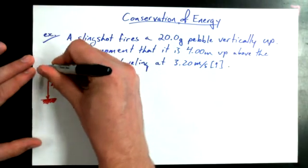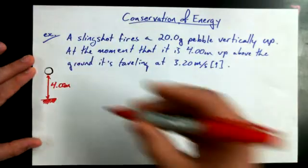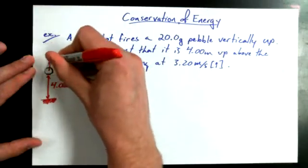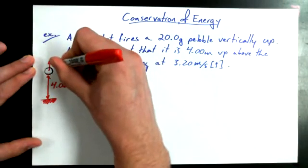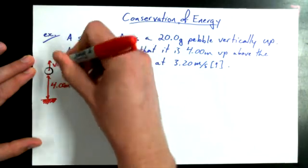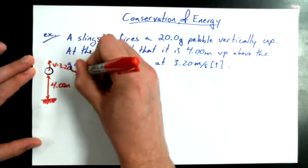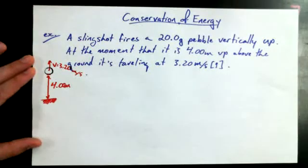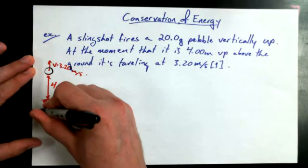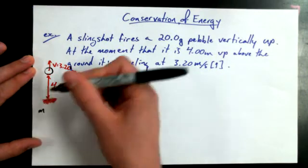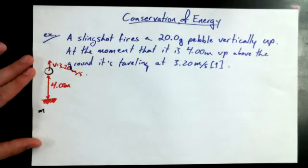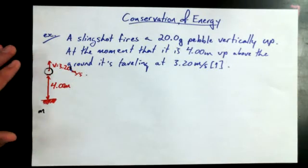So we've got this pebble that when it gets up to 4 meters is still traveling at a velocity of 3.20 meters per second upwards. And we should say its mass as well along with our diagram here. Now this isn't a free-body diagram, I'm just writing.